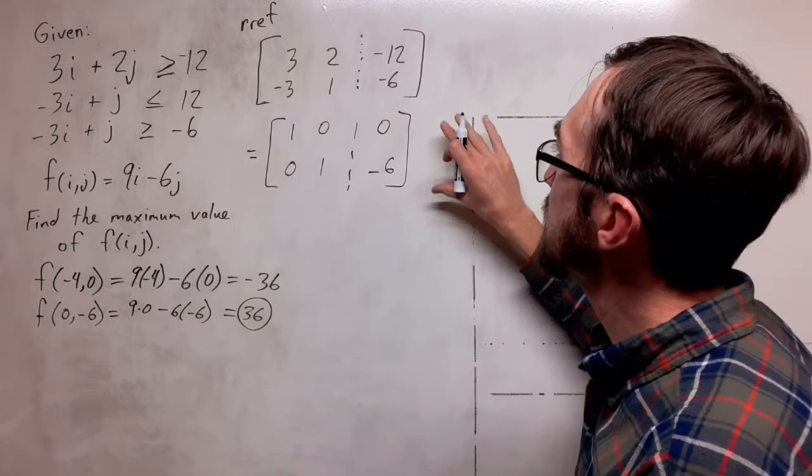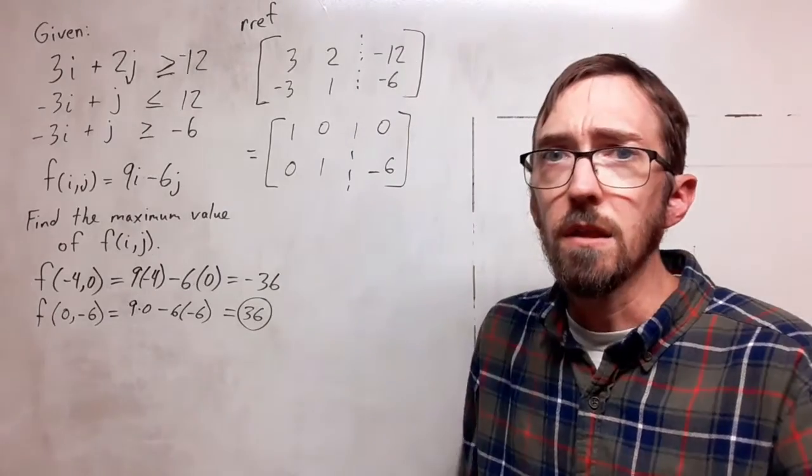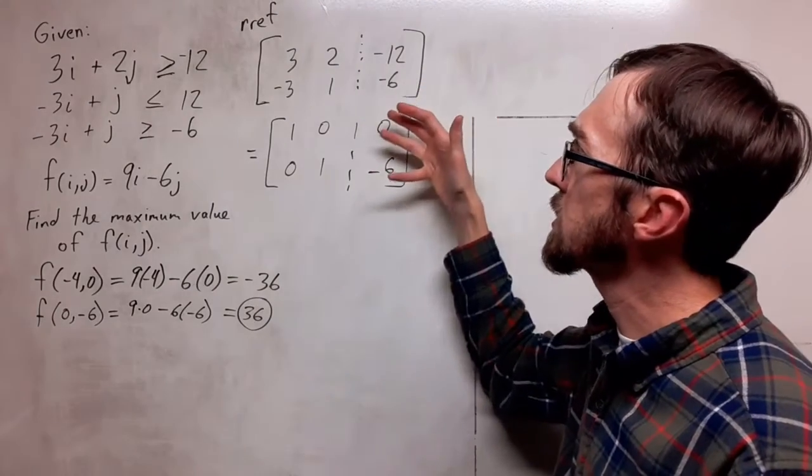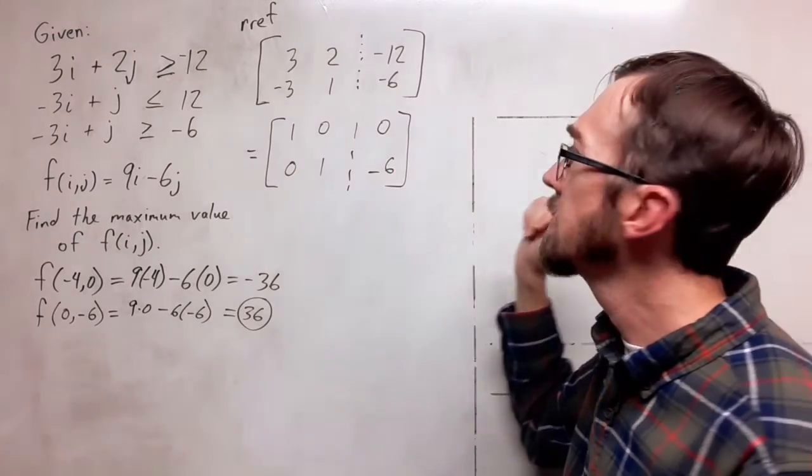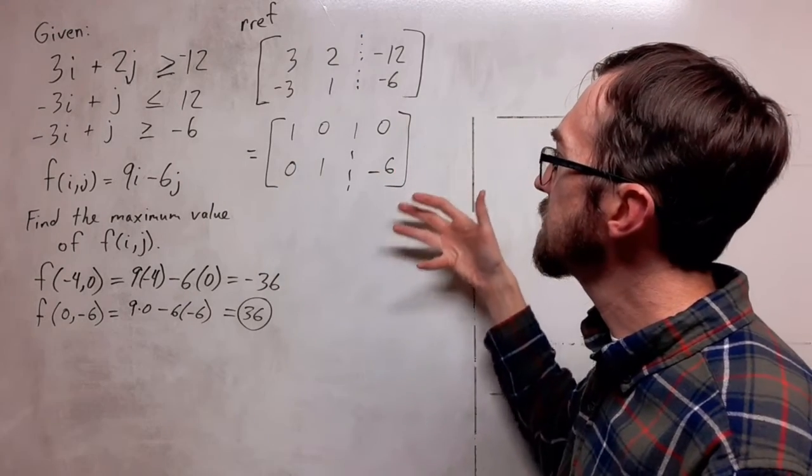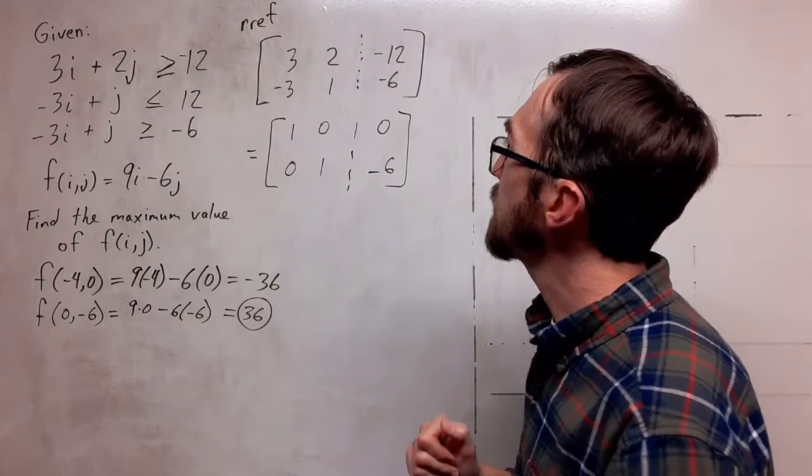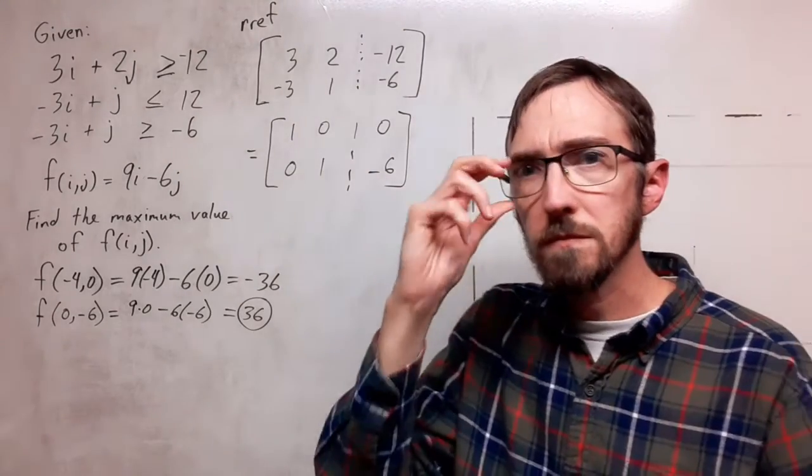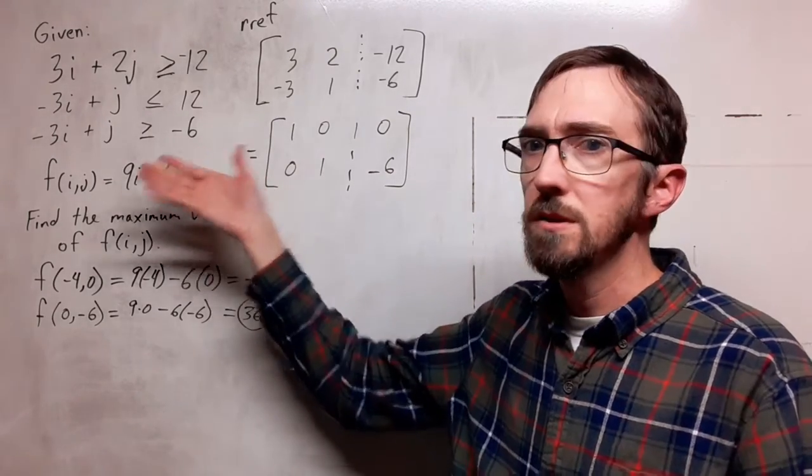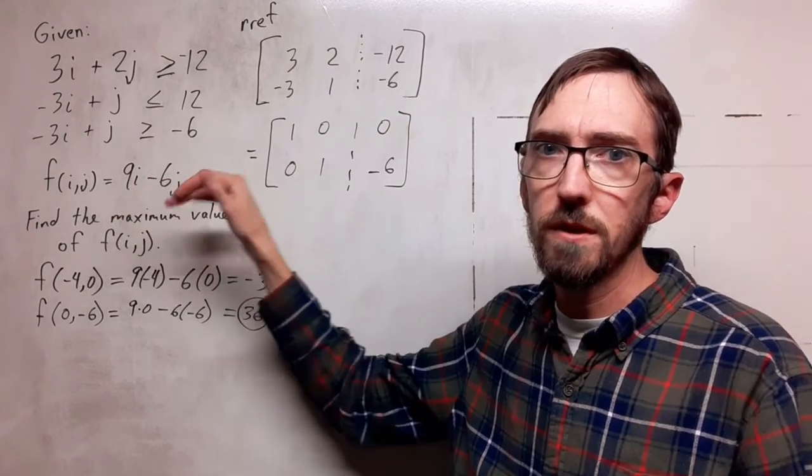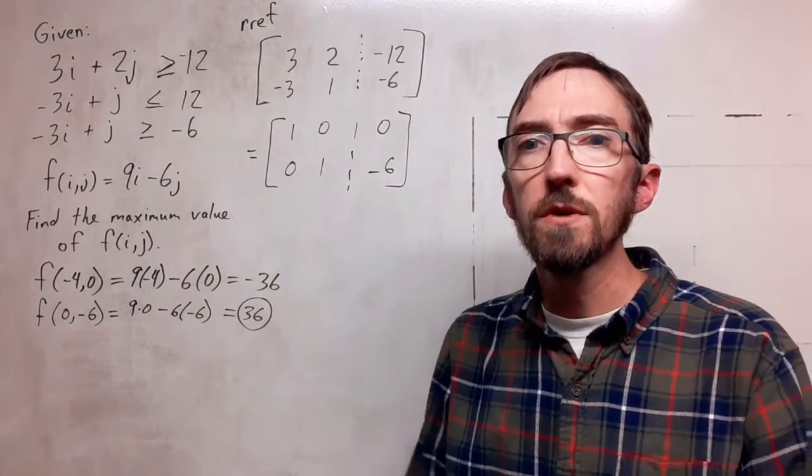I like using matrices when I can to help simplify the algebraic work. I like to do the reduced row echelon form with the augmented matrices. I find these to be a really quick, effective way to do these problems. Hopefully this has been an interesting look at solving systems of linear inequalities with a constraint function. Cheerful calculations!